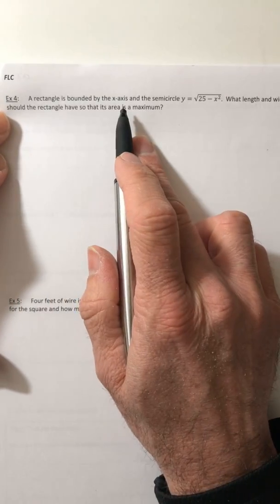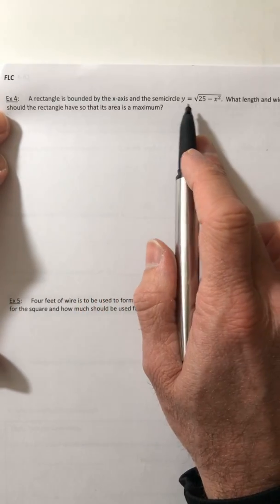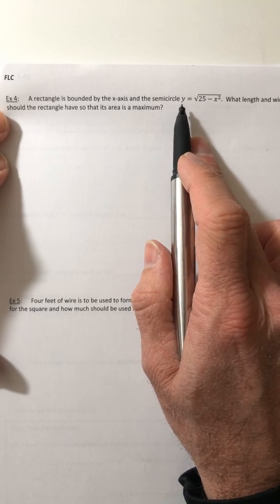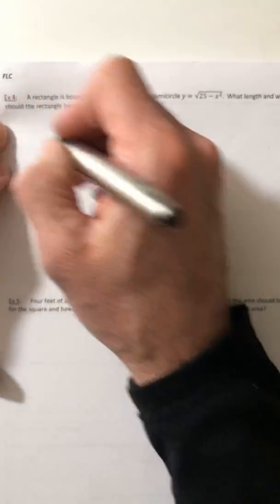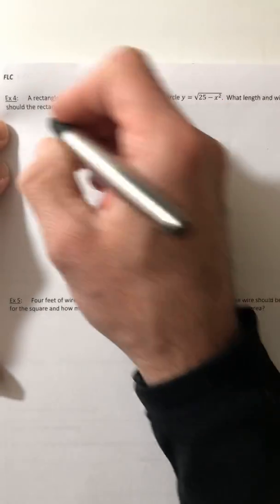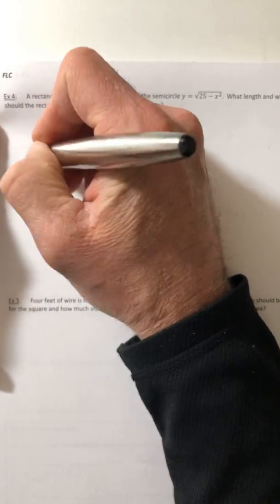So a rectangle is bounded by the x-axis and the semicircle y equals root 25 minus x squared. What length and width should the rectangle have so that its area is a maximum? So let's draw this out.